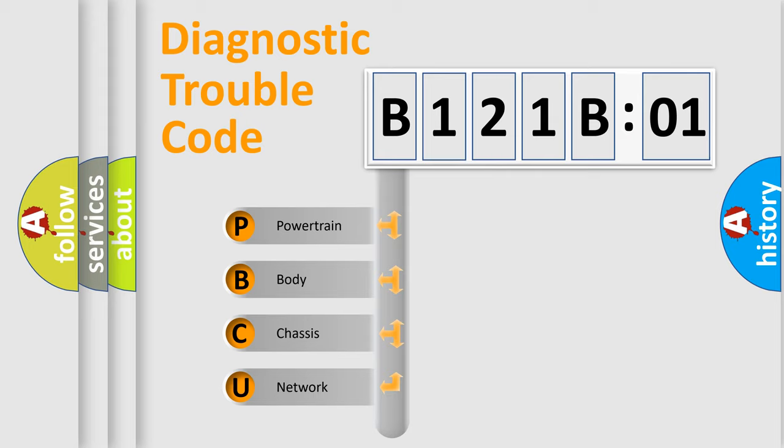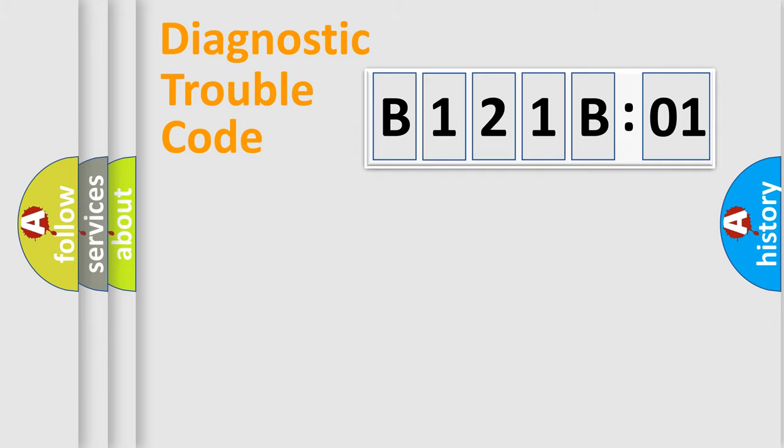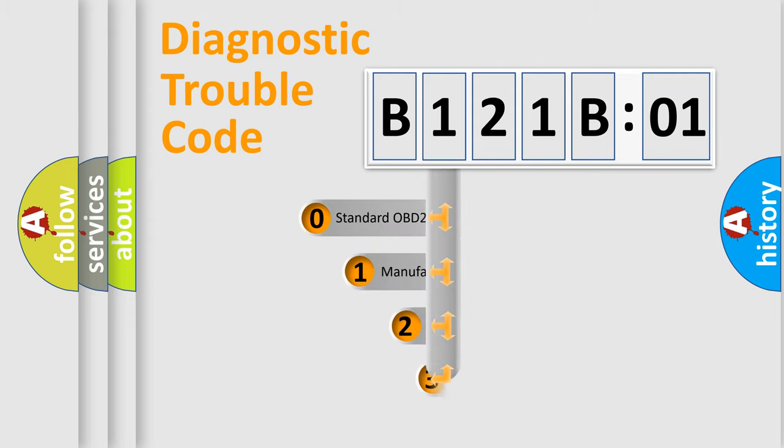We divide the electric system of the automobile into four basic units: Powertrain, Body, Chassis, and Network. This distribution is defined in the first character code.